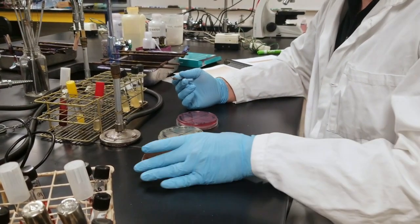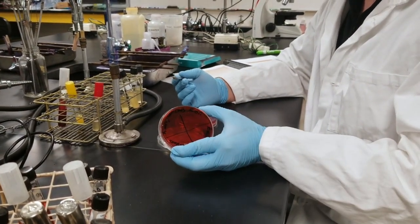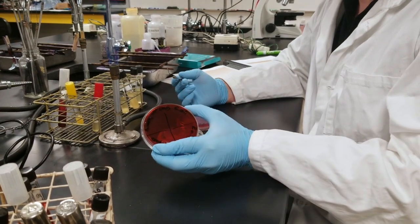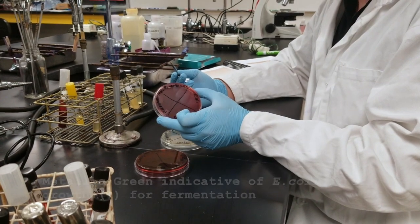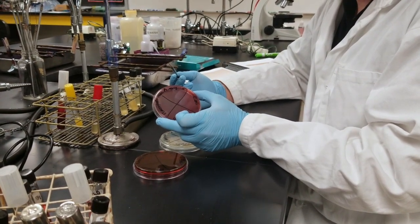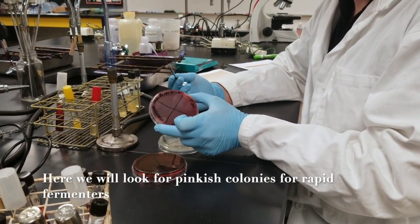We have our EMB plates which will have a metallic green color positive for fermentation, and then MAC is also another plate that will be differential for fermentation as well.